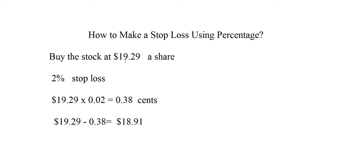Suppose you buy a stock at $19.29 a share. You want to put your stop loss at 2%, meaning you only want to lose 2% if you are wrong — if the market is going down and you went long. To calculate: $19.29 multiplied by 0.02 equals $0.38 per share. So you are losing 38 cents per share.